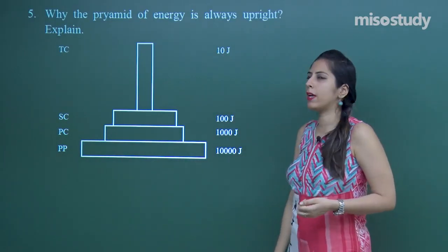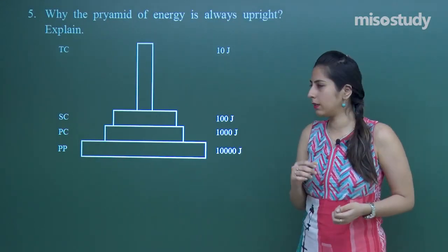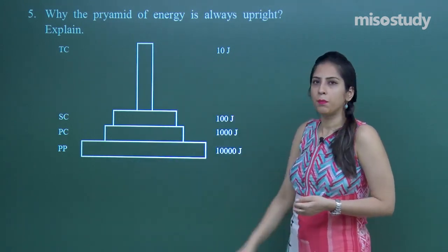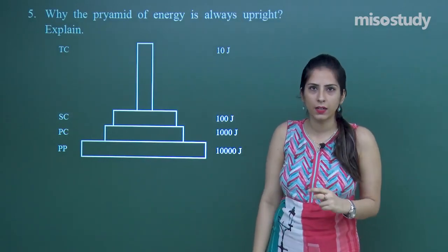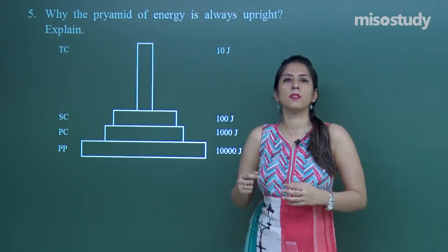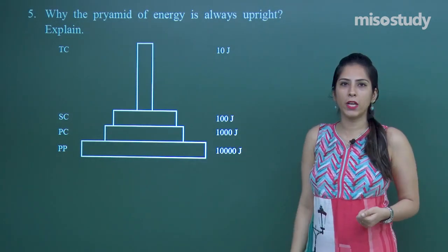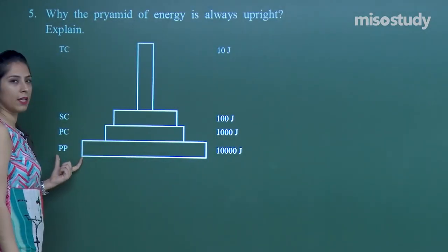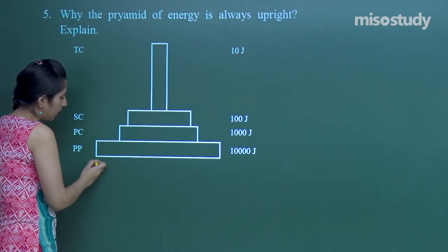Question number five, two marks: why is the pyramid of energy always upright? A pyramid is a graphical representation on which different trophic levels are arranged. They can be arranged on the basis of energy, biomass, or number. In the pyramid of energy, the trophic levels from base to top are: primary producers (PP), primary consumers (PC), secondary consumers, and tertiary consumers.